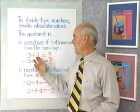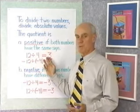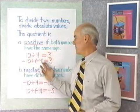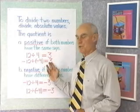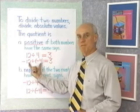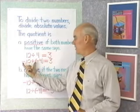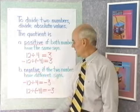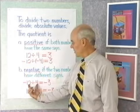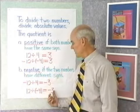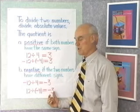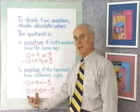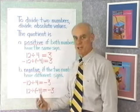So, 12 divided by 4 is 3. Negative 12 divided by negative 4 is also 3, because we simply divide absolute values and if the two numbers have the same sign, the answer is positive. We divide absolute values and in both cases we get 3. Since the two numbers have different signs, the answer is negative.